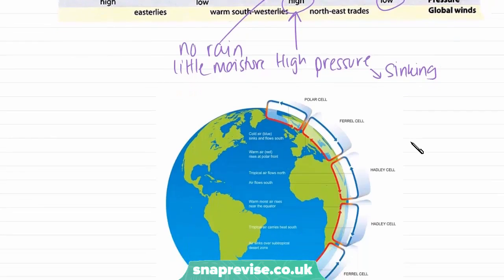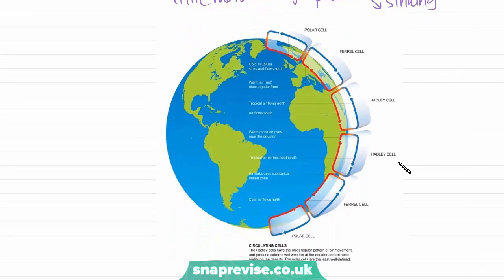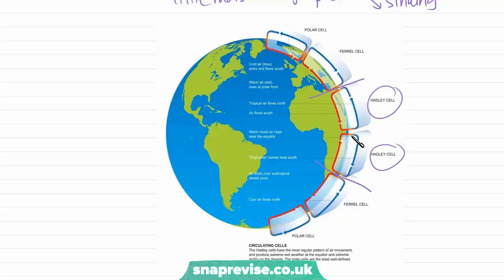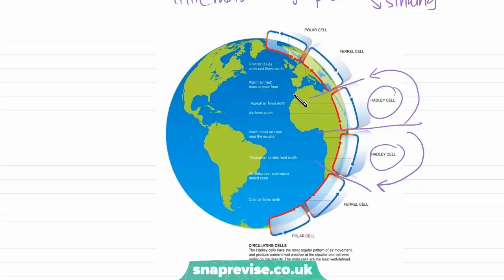On a larger world map, deserts are forming at the edges of the Hadley cells on either side of the equator. It's really important to remember Hadley cells. As you can see, the end of the Hadley cell is right in line with the Sahara Desert in North Africa, which really shows that atmospheric circulation is a main cause of desert formation.